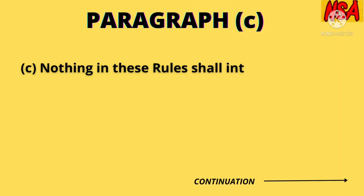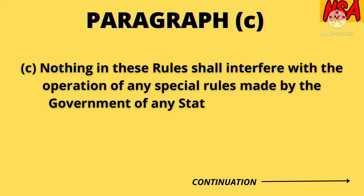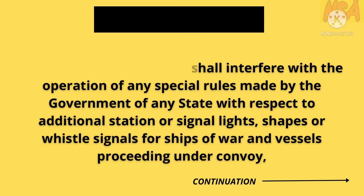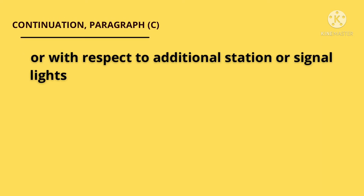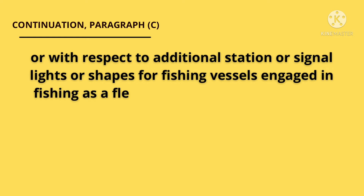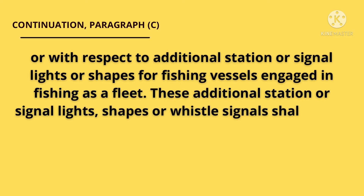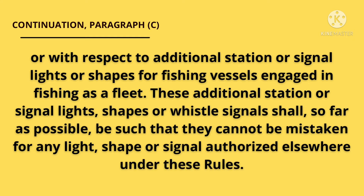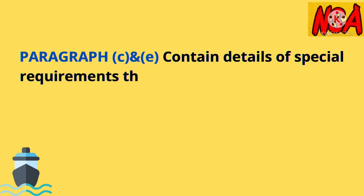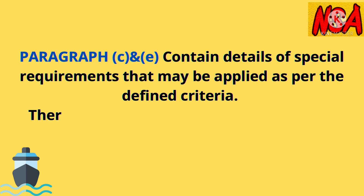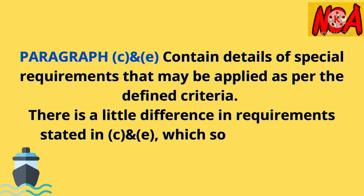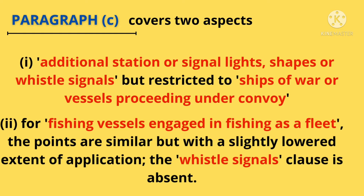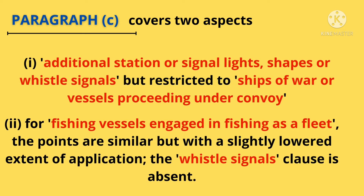Paragraph C: Nothing in these rules shall interfere with the operation of any special rules made by the government of any state with respect to additional station or signal lights, shapes, or whistle signals for ships of war and vessels proceeding under convoy, and with respect to additional station or signal lights or shapes for fishing vessels engaged in fishing as a fleet. Paragraph C covers two aspects: first, additional station or signal lights, shapes, or whistle signals, but restricted to ships of war or vessels proceeding under convoy.